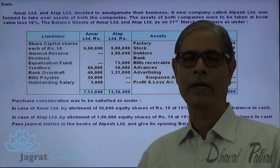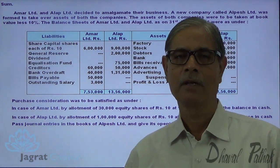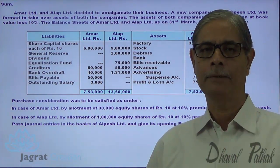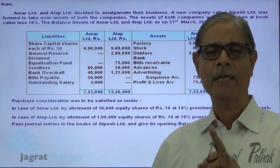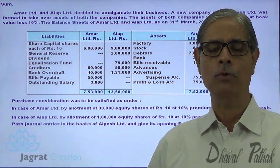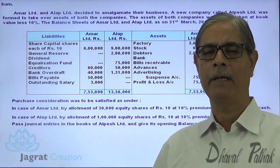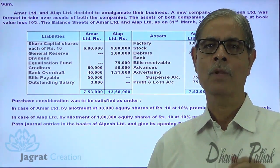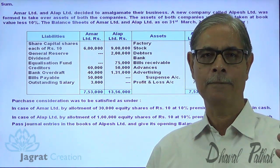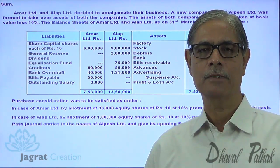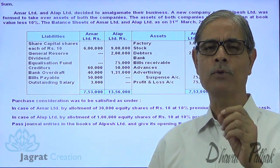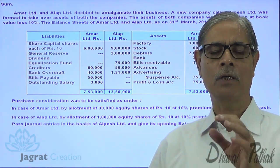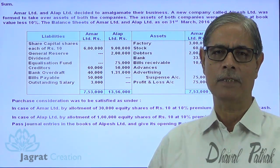Whenever we want to solve a sum on amalgamation or absorption, we are required to find out the purchase price for a company. For the purpose of calculating purchase price, there are generally two methods: net asset method or net payment method. The purchase price is decided on the basis of total payment made, or by the total of net assets purchased, or sometimes you are given directly a lump sum paid for the purchase — that is the third alternative, wherein we are not required to find out the purchase price.